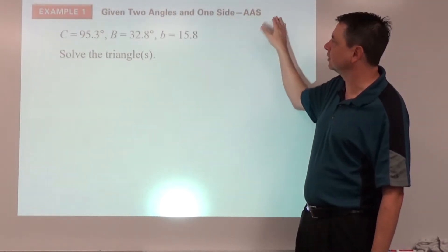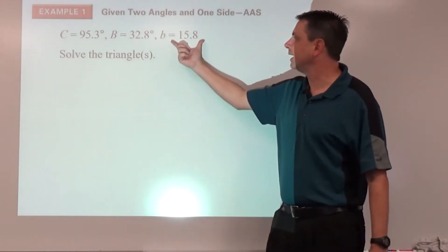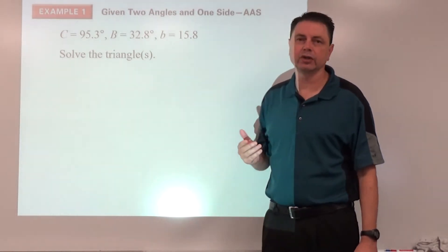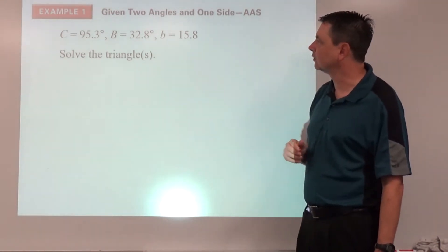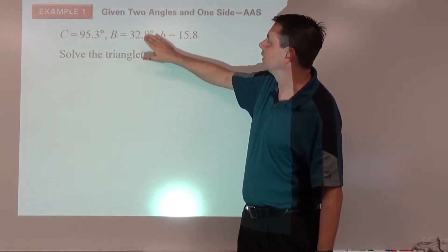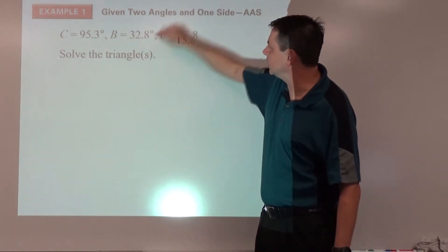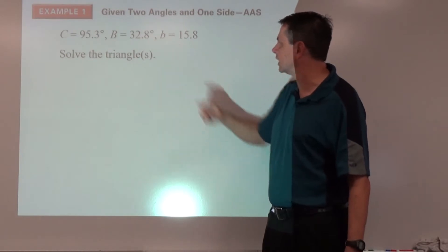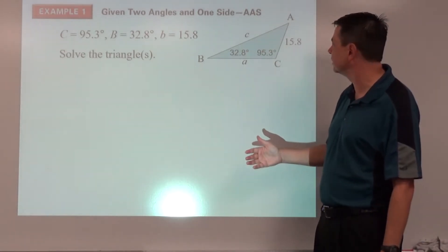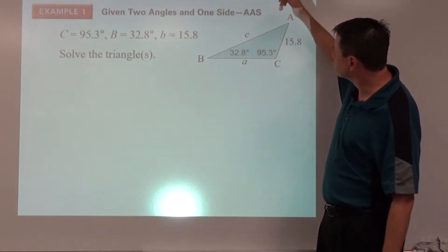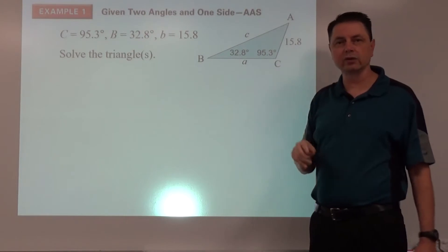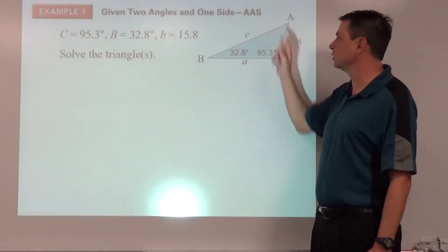Example number one is an angle-angle-side case — we're given two angles and one side. It says solve the triangle. It's a good idea to sketch the figure: we've got angle C = 95.3°, angle B = 32.8°, and the side opposite angle B is 15.8. Solving the triangle means finding all the missing pieces — we need angle A, and the two missing side lengths. Whenever we know two angles and one side, the first thing we should find is the missing angle.